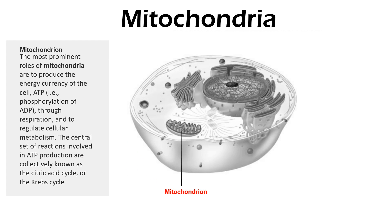The mitochondria — or mitochondrion — most prominently produce the energy currency of the cell, ATP, through phosphorylation of ADP via respiration, and regulate cellular metabolism. The central set of reactions involved in ATP production are collectively known as the citric acid cycle, or the Krebs cycle. The mitochondria can be considered the powerhouse or energy source of the cell.